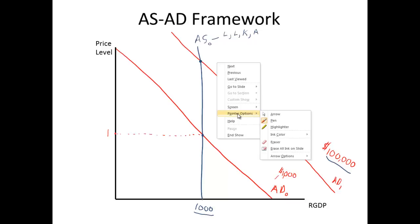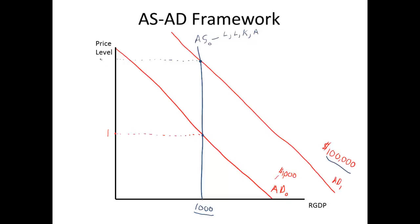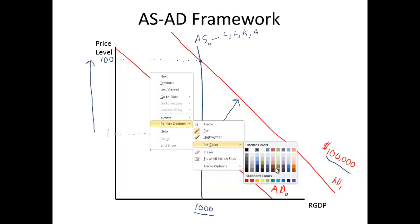But if we're spending a hundred times more money on the same amount of goods — take this back to the quantity theory of money — the price level is going to go up a hundredfold. In other words, in the classical and real business cycle framework, if we increase aggregate demand, it doesn't help us at all. It just creates instantaneously and automatically massive inflation in the economy.